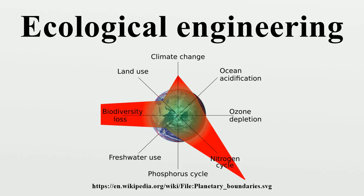They summarize five concepts key to ecological engineering: it is based on the self-designing capacity of ecosystems; it can be a field test of ecological theory; it relies on integrated system approaches; it conserves non-renewable energy; and it supports biological conservation. Bergen et al. defined ecological engineering as utilizing ecological science and theory, applying to all types of ecosystems, adapting engineering design methods, and acknowledging a guiding value system.